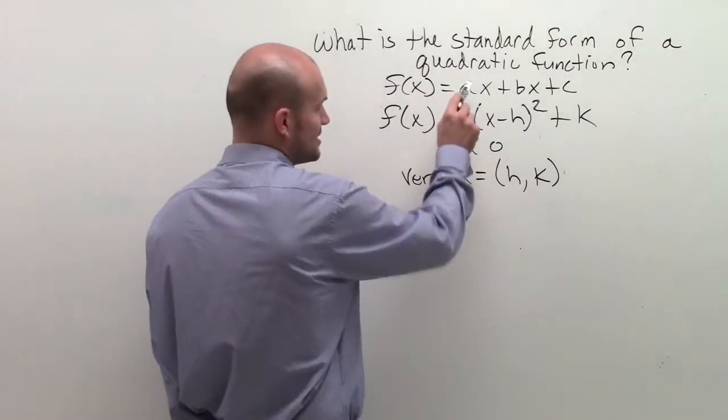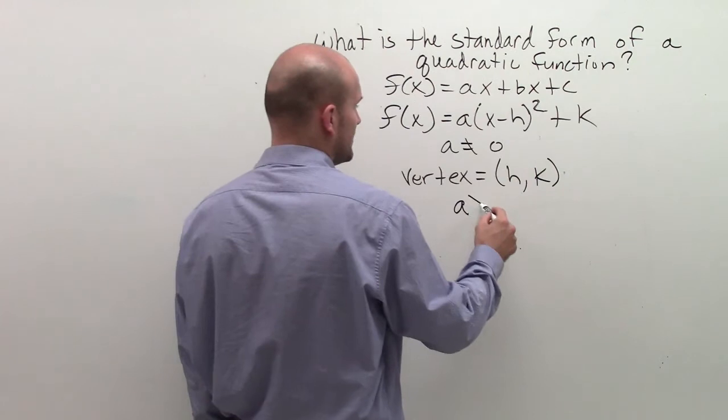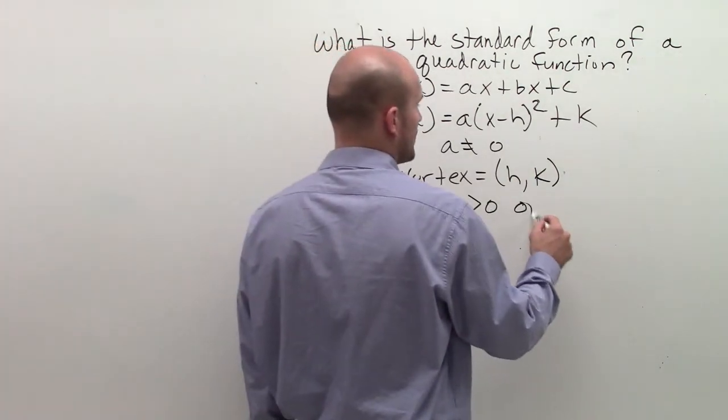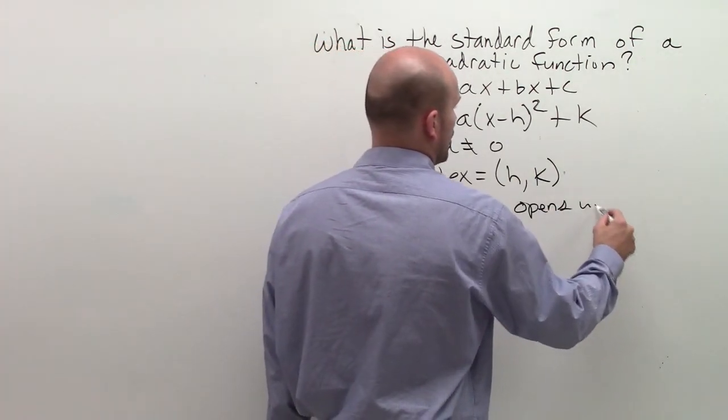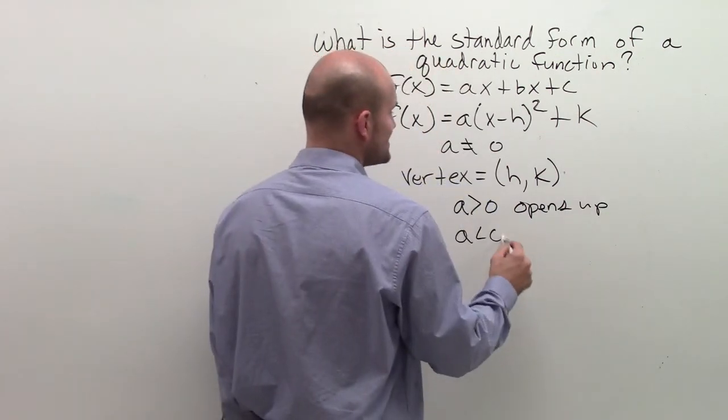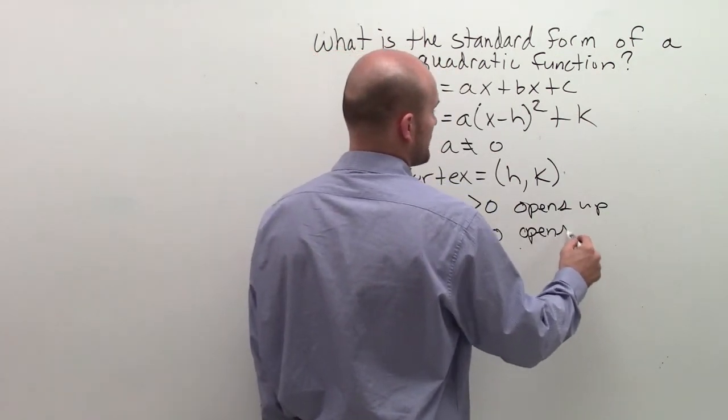The other way is, just like on the original definition, if a is greater than 0, our parabola opens up. And if a is less than 0, our parabola opens down.